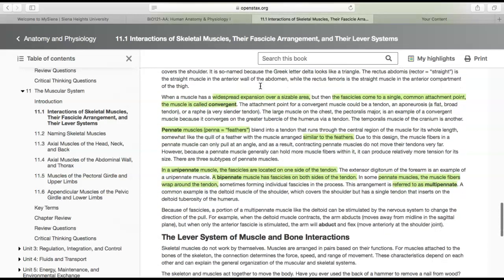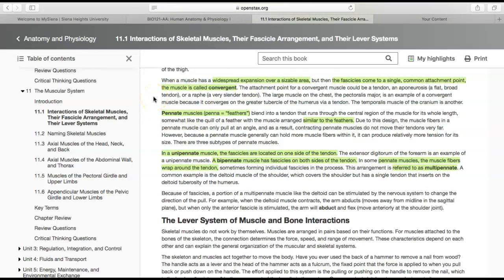When a muscle has a widespread expansion over a big area, but then the fascicles come to a single common attachment point, we call this a convergent muscle—because they converge. The attachment point for a convergent muscle could be a flat, broad tendon or a very slender tendon, but it's usually a tendon. One example is the large muscle on the chest, the pectoralis major, which converges on the greater tubercle of the humerus via a tendon.